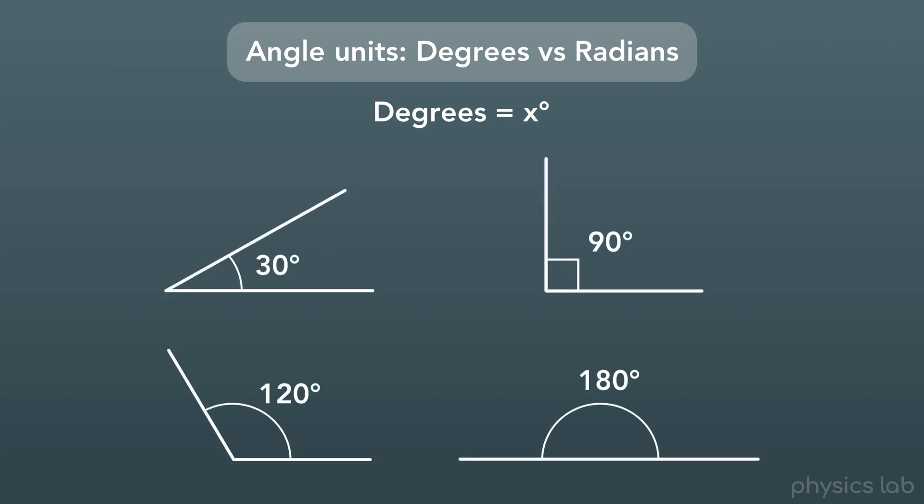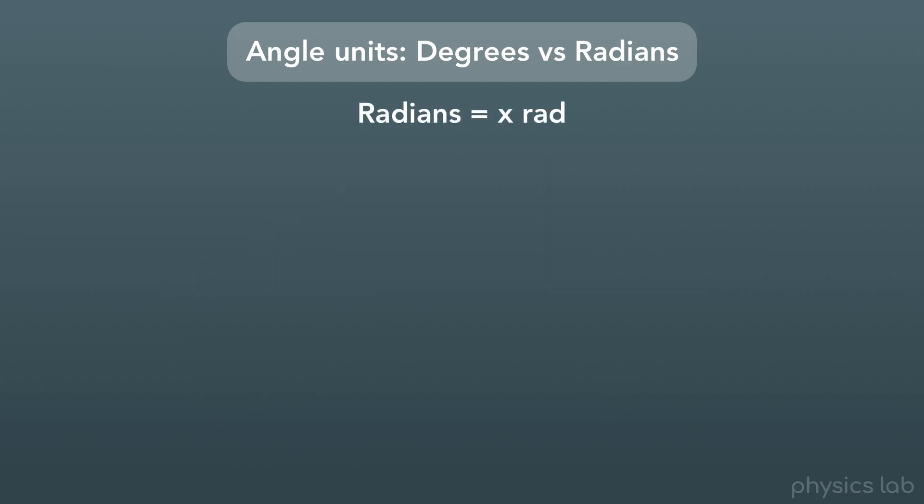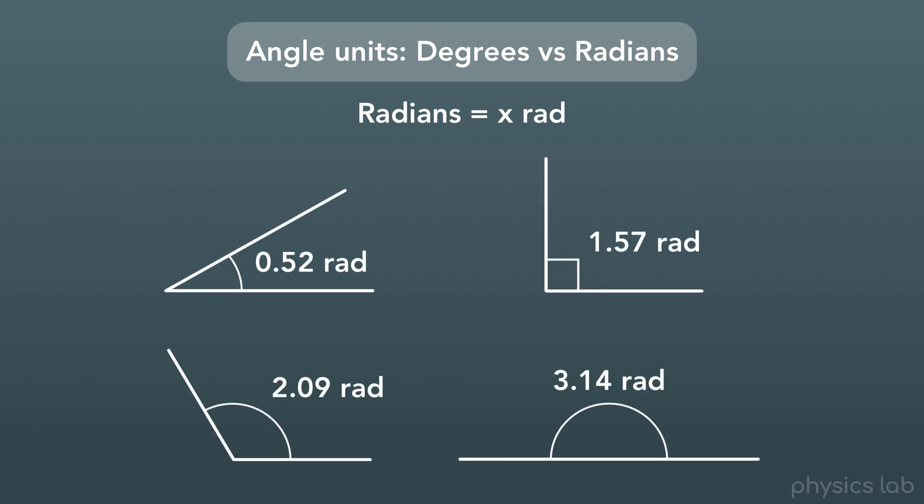But in physics, we sometimes use the unit known as radians, which we write as RAD. Here are those same exact angles measured in units of radians. These numbers look a little weird, although that last one might look familiar to some of you.